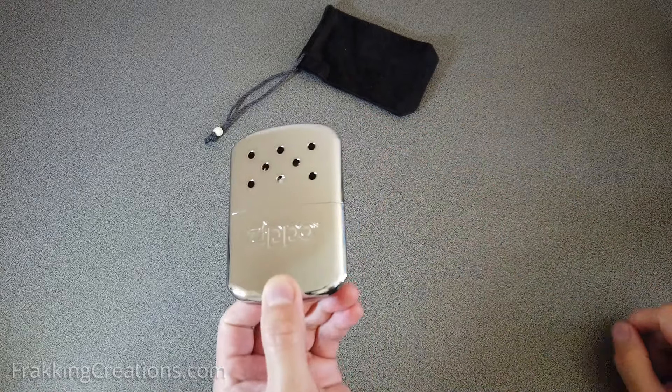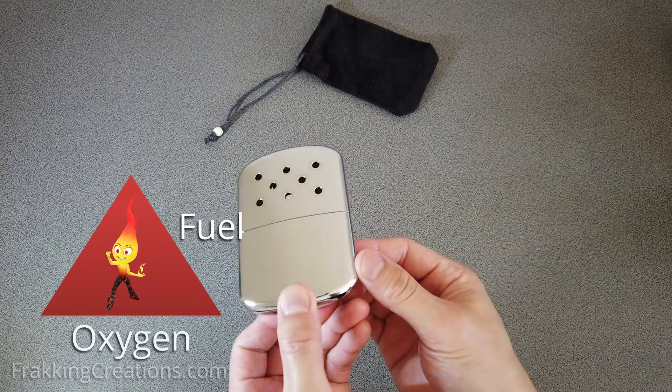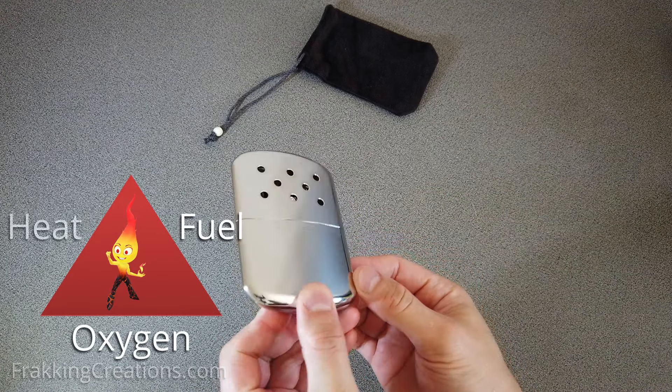If you remember the fire triangle from science class in school, a fire needs three things: fuel, oxygen, and heat. Take one of these away and the fire stops.